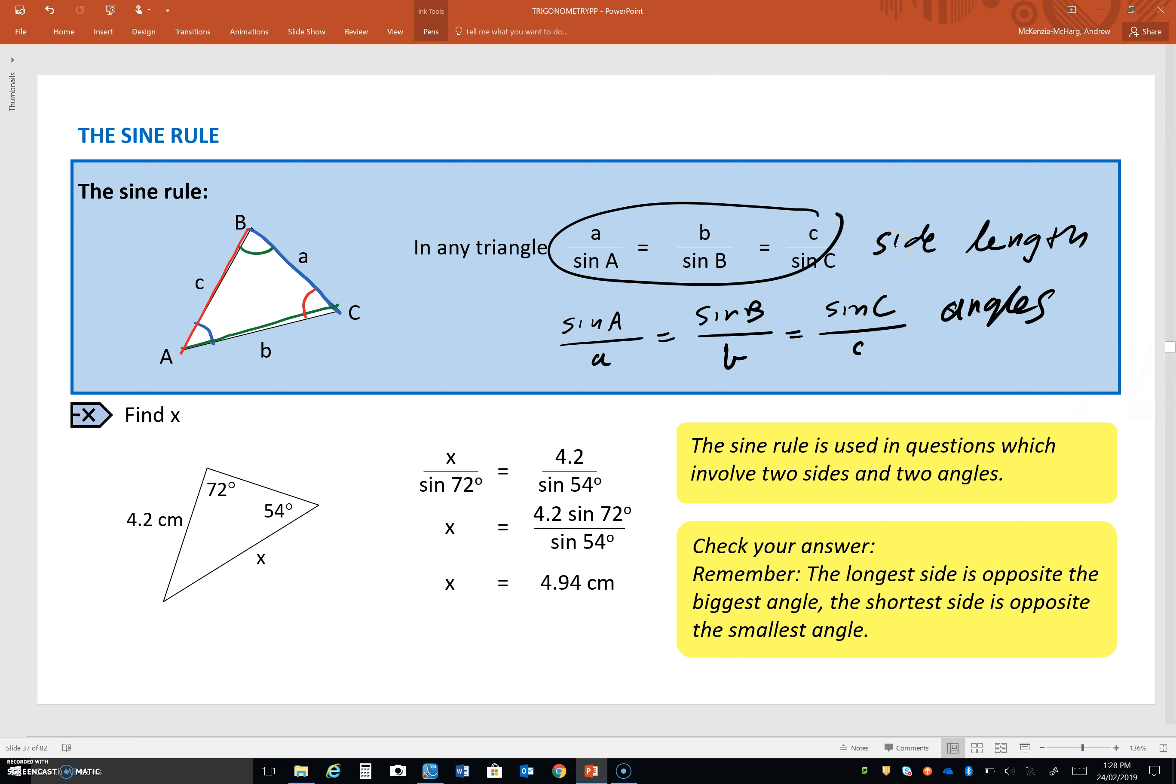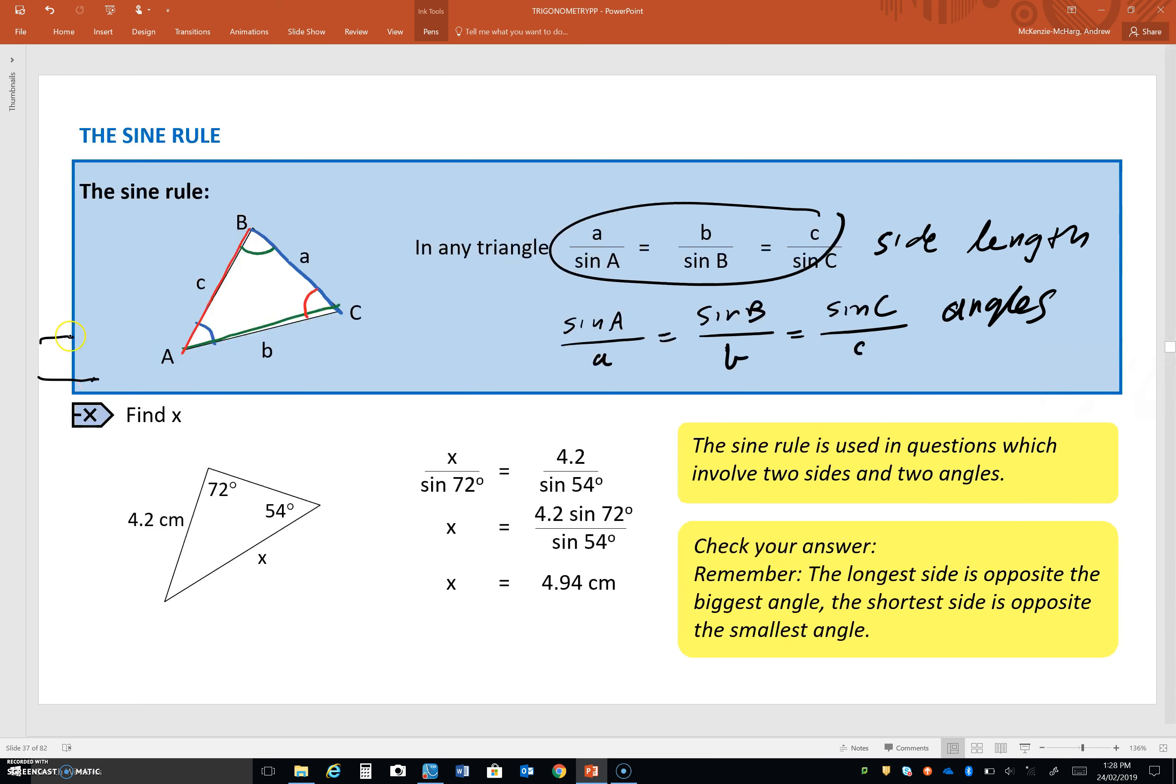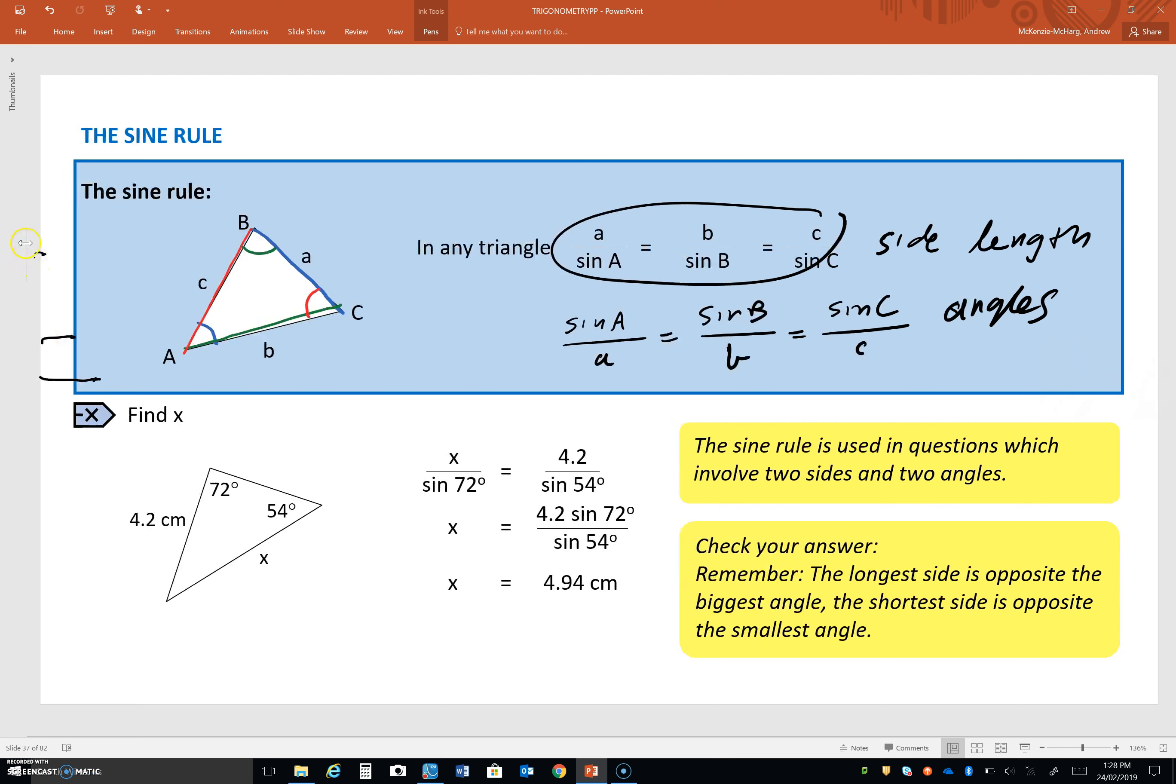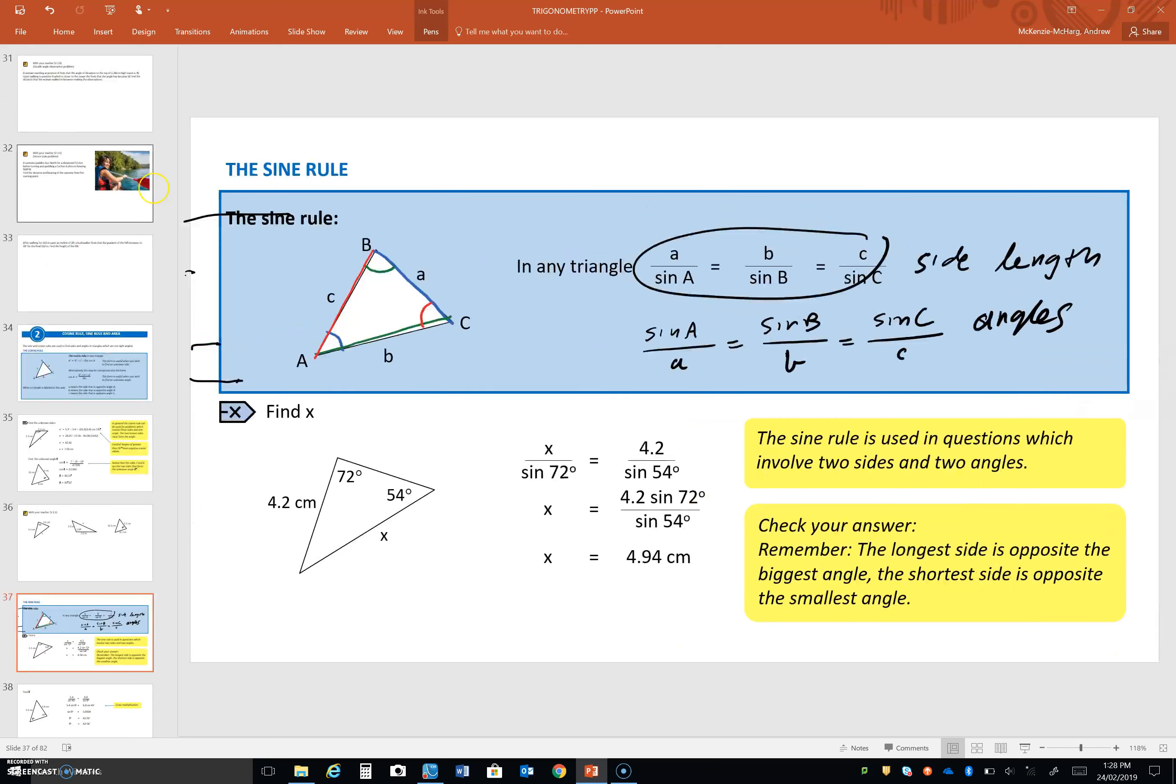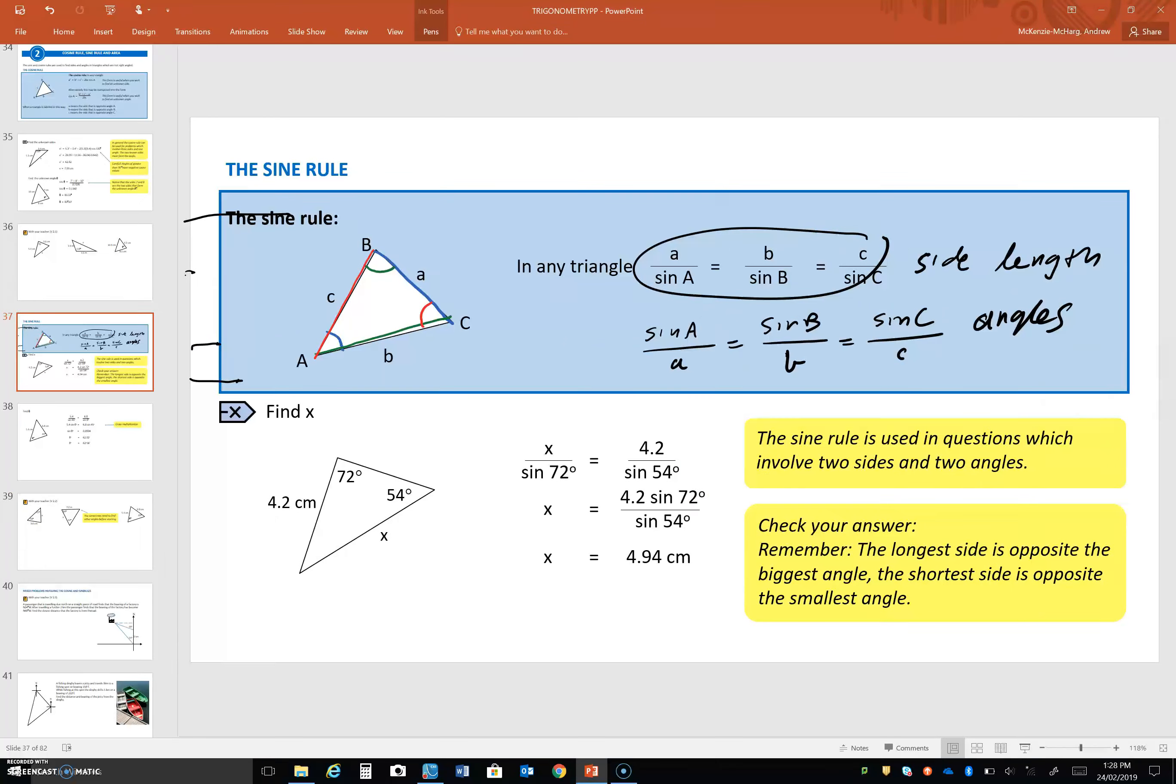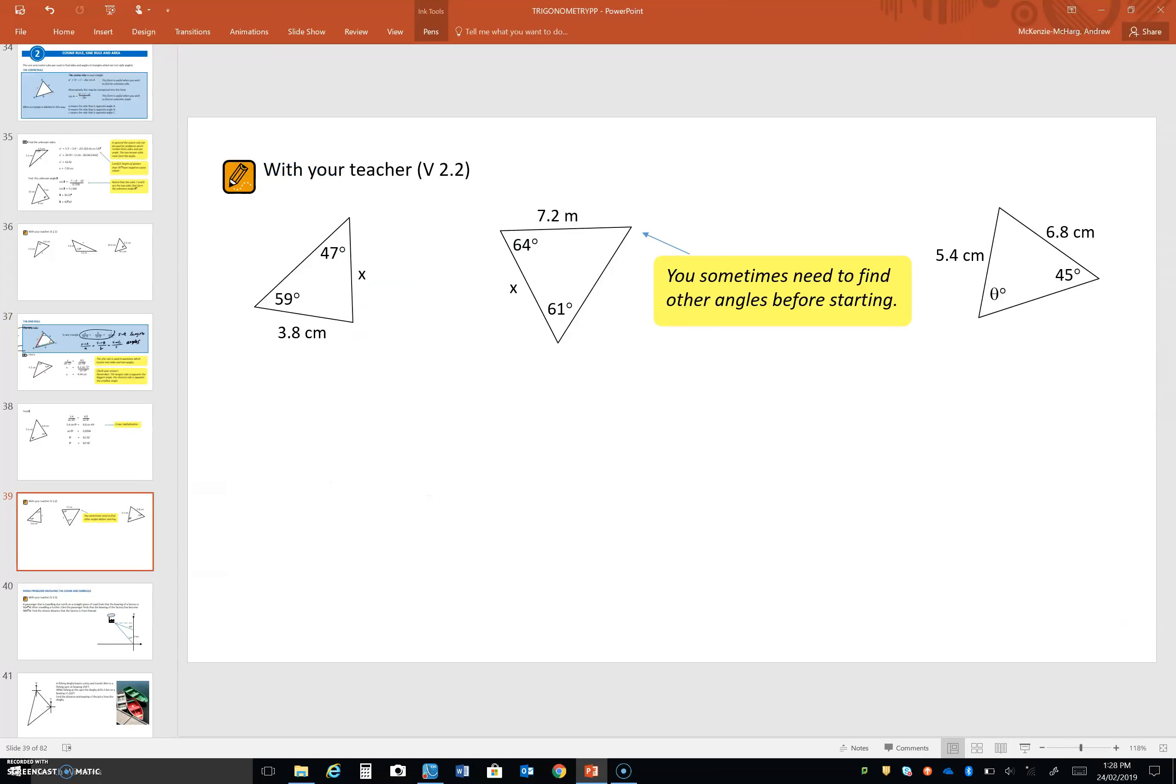So, just like with the cosine rule, there's one version for side lengths and one version for angles. Okay, now, we'll go to the next slide and have a go at some questions here. If I can manage to get that. So, here are our examples here. The first two involve finding side lengths. So, we're going to have the one with the little letters on top, that version of the sine rule.